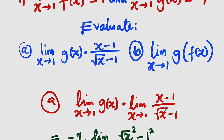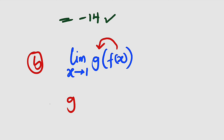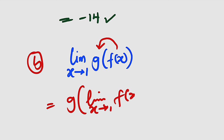Now let us take the second one. We are asked to evaluate the limit as x approaches 1 of g of f of x. You should know that g of f of x is a function of a function — we are trying to morph f of x into g. Since the limit of a product is the product of the limits, we can bring out g: g of the limit as x approaches 1 of f of x.